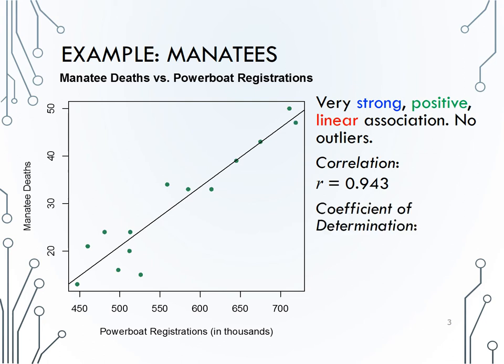How would you determine the coefficient of determination, then? Well, remember, r squared is just the correlation coefficient squared, so .943 squared gives me 88.9% or .889.